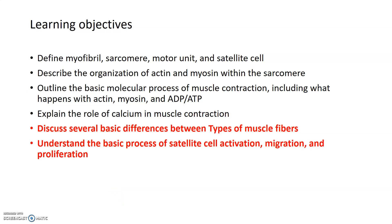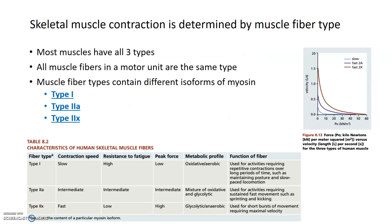This is the final part of a lecture from October 21st on skeletal muscle function, so that we can understand all the essential things about how skeletal muscle contracts and what other cells are involved in its maintenance and regeneration, before we start talking about what happens with age. For this final part, we'll cover the basic differences between muscle fiber types, as well as what satellite cells are and how they work to repair and regenerate muscle tissue.